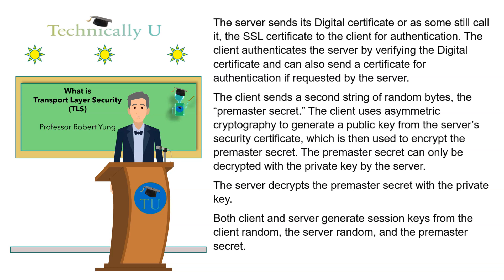The client authenticates the server by verifying the digital certificate, and can also send a certificate for authentication if requested by the server. The client sends a second string of random bytes — the premaster secret. The client uses asymmetric cryptography to generate a public key from the server's security certificate, which is then used to encrypt the premaster secret. The premaster secret can only be decrypted with the private key by the server, which then decrypts it.